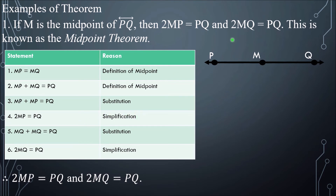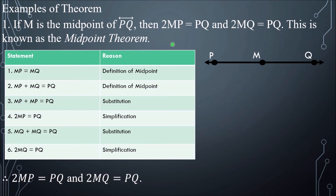Continuing the midpoint theorem proof for the second part: MQ plus MQ equals PQ, substituting MP with MQ since MP equals MQ, reason: substitution. Simplifying: 2MQ equals PQ, reason: simplification. Conclusion: therefore, 2MP equals PQ and 2MQ equals PQ. We proved the statement, so it is called a theorem — we must prove it first before we can say it is true.